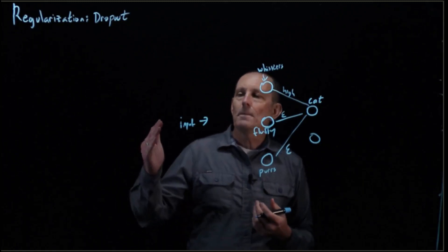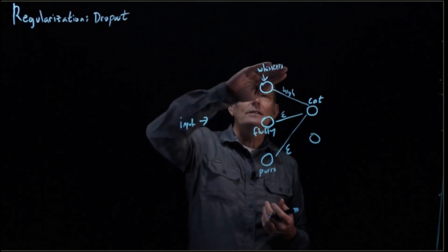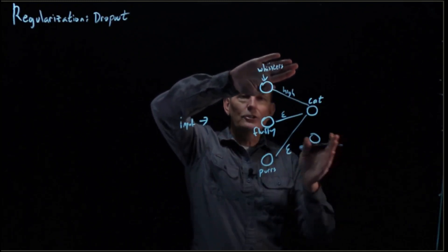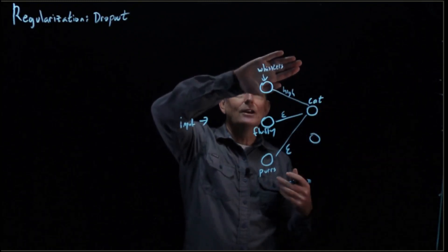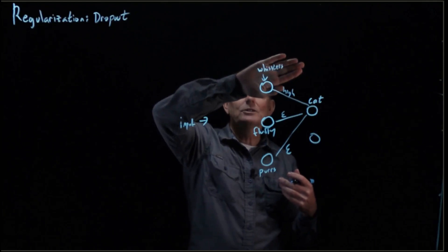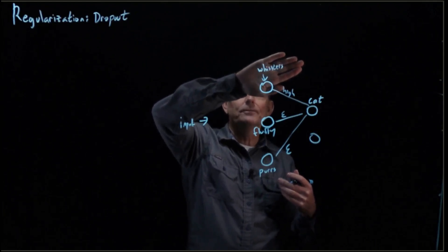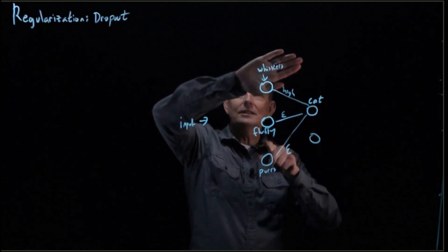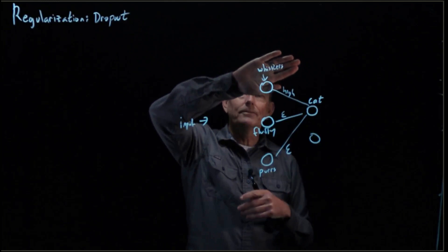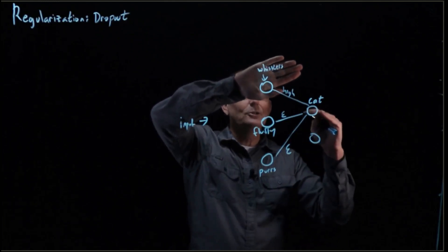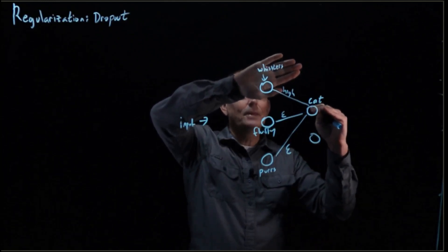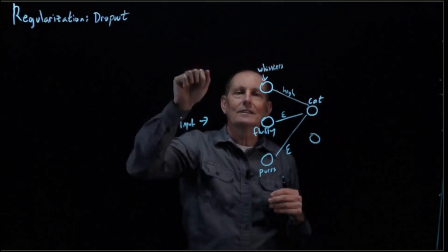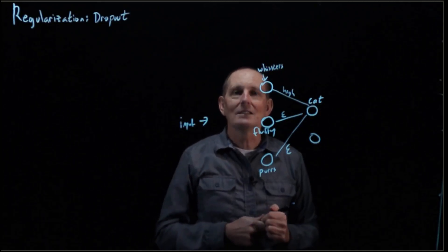For a particular batch, we may say: you have to learn how to do your job of identifying cats, but I don't give you any whiskers. This node is going to just return zero. And so you have to learn whether this is a cat or not based on just whatever your remaining nodes are. That's going to cause it to be a stronger node, better able to determine, because it's not going to be so reliant on the features that have been so helpful in the past.